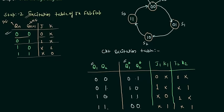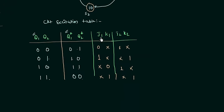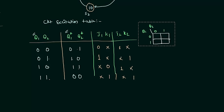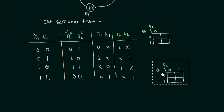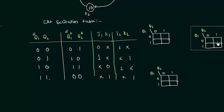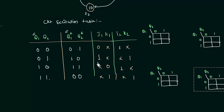Step number 4: we make K-maps to determine the values of J1, K1, J2, and K2. Since we have two variables Q1 and Q2, we use a 4-cell K-map and need 4 such maps. The K-map axes are Q1 and Q2 with values 0,1. For J1, filling the map gives: 0, 1, don't care, don't care — a simple pair. So J1 equals Q2. For K1 the values are: don't care, don't care, 0, 1 — again a simple case.